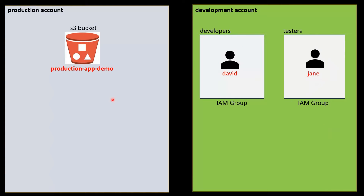Developers and Testers use this Development account to test their applications. We manage our IAM users in the Development account only. In the Production account, we do not create or manage any IAM users — all our IAM users are in the Development account. The Production account can be accessed only by the Administrators.